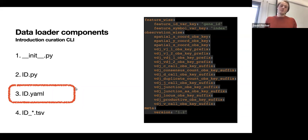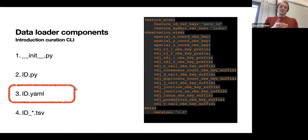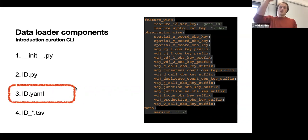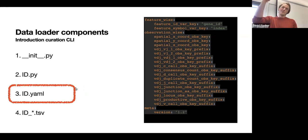Together with the layers, this gives us support for spliced/unspliced velocities, VDJ, spatial, ATAC, and assay — defined per feature mostly. That covers the YAML structure.